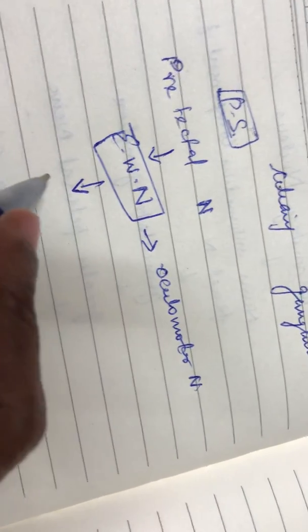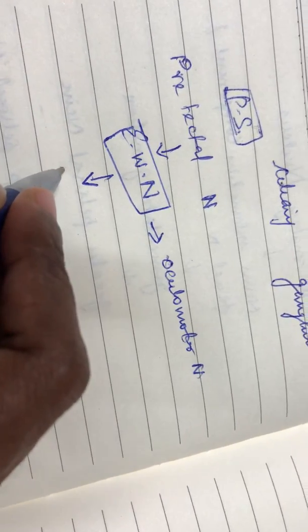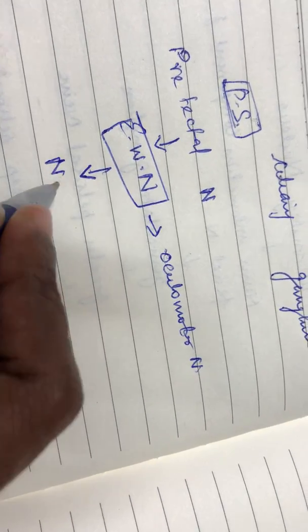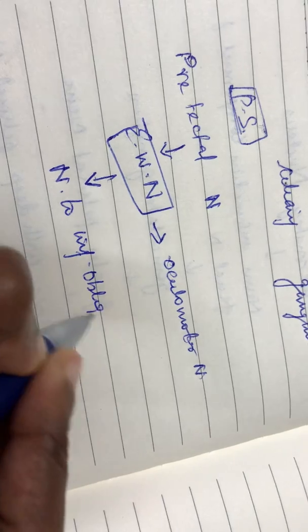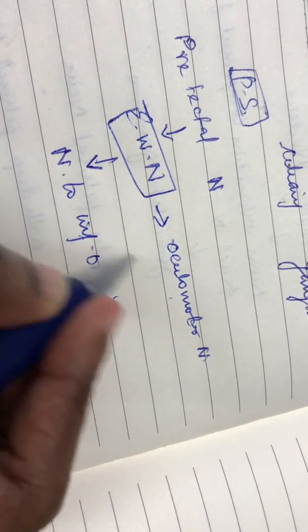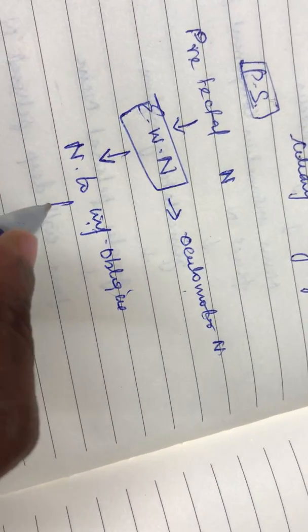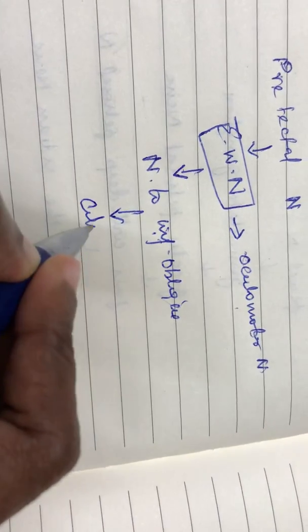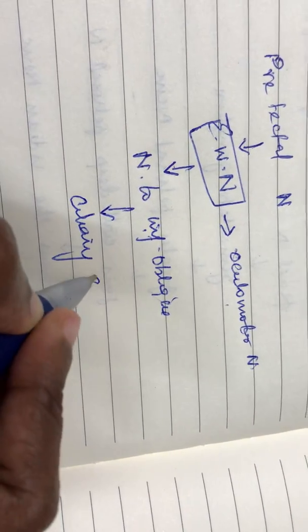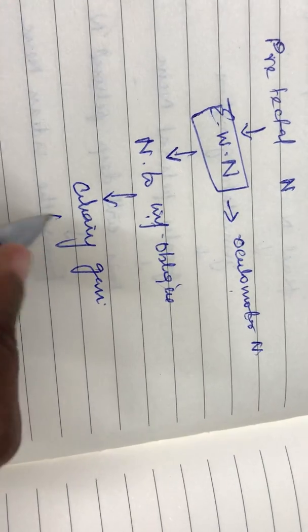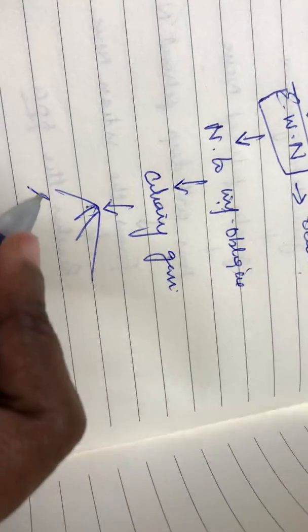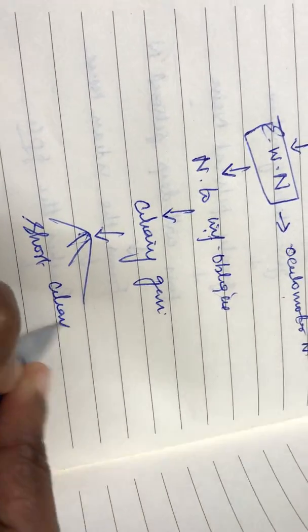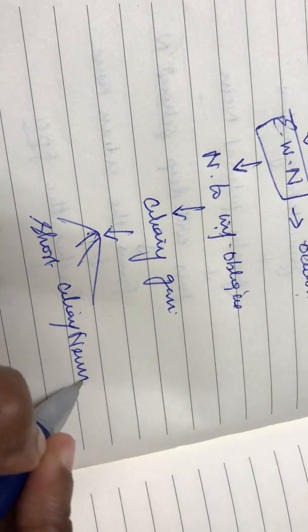The Edinger-Westphal nucleus contacts a nerve going near the ciliary ganglion — via the nerve to inferior oblique. The nerve to inferior oblique is a branch from the oculomotor nerve. It reaches the ciliary ganglion, where it gets relayed. The fibers coming out from the ciliary ganglion are called short ciliary nerves.